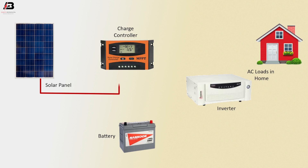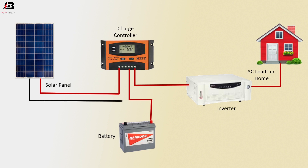Positive connection from solar panel to charge controller. Positive connection from charge controller to battery. Positive connection from charge controller to inverter. AC output from inverter to load. Negative connection from solar panel to charge controller. Negative connection from charge controller to battery. Negative connection from charge controller to inverter. AC neutral output from inverter to load.